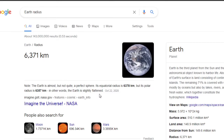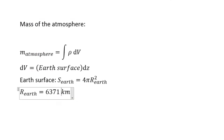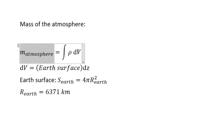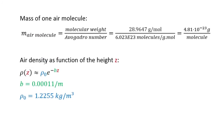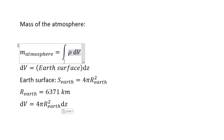Of course, we are supposing that the Earth is a perfect sphere, which it is not. Now we have all the tools to compute the mass of the Earth's atmosphere. Let's first obtain our differential here. We're going to substitute this differential and the density — given by the exponential expression — into the equation, and integrate from 0 to infinity.